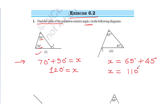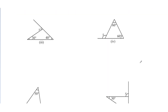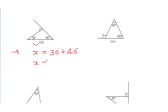Here, what will x be? x is equal to 30 degrees plus 40 degrees. Do the addition of both — 30 degrees plus 40 degrees — that is 70 degrees.